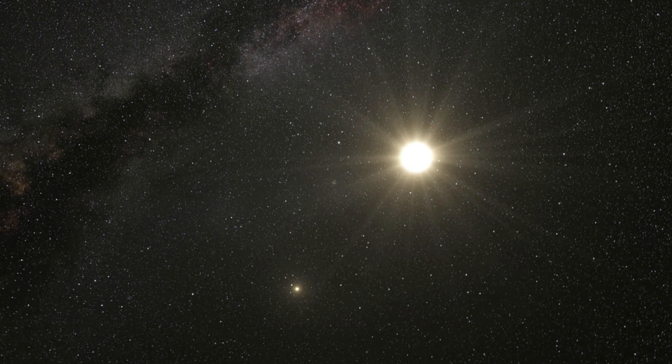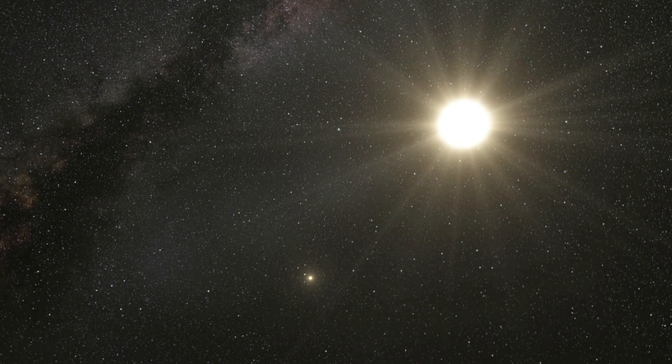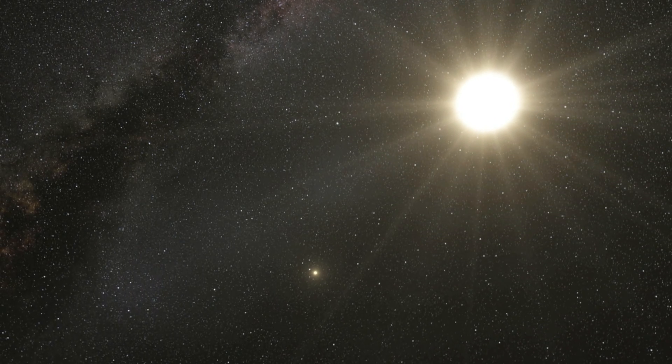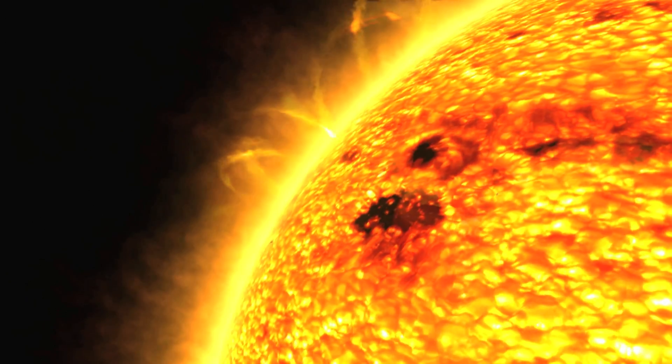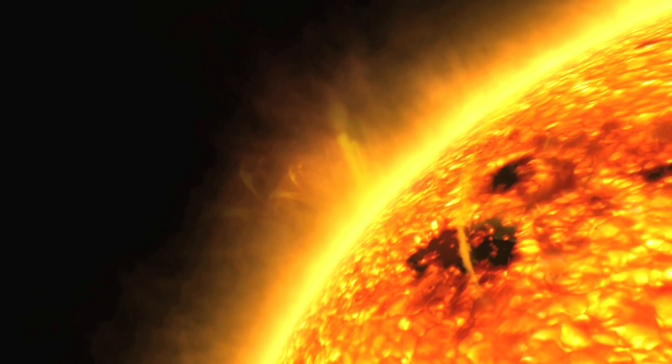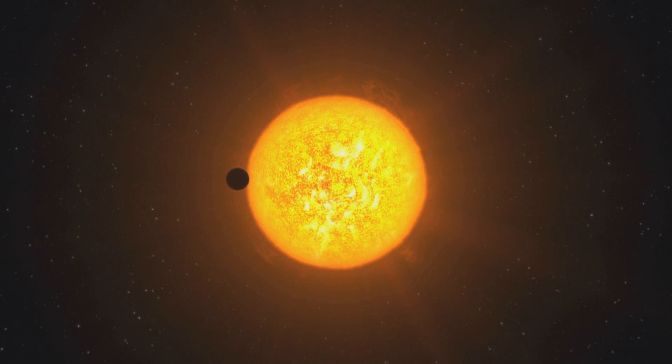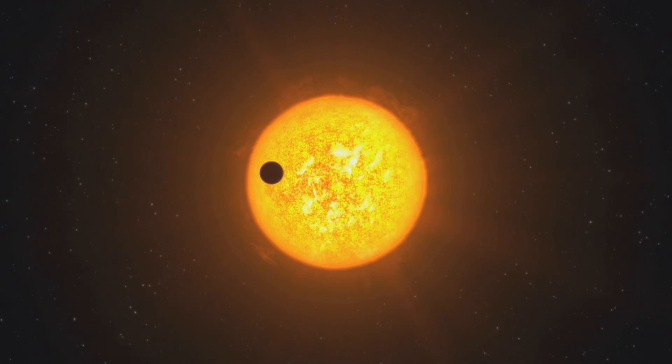Solar twins, solar analogues and solar-type stars are categories of stars based on how similar they are to our own Sun. Solar twins, stars almost identical to the Sun, are very rare. But the other classes, where the similarity is a lot less precise, are much more common.